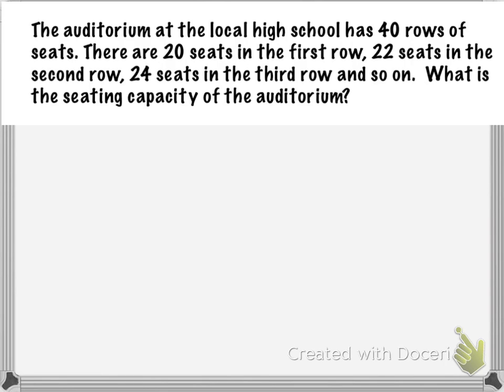We want to begin by writing down the first few terms in this sequence. It says there are 20 seats in the first row, followed by 22 seats in the second row, 24 seats in the third row, and so on. Right now you can see that it appears we are adding 2 each time to get from one term to the next.